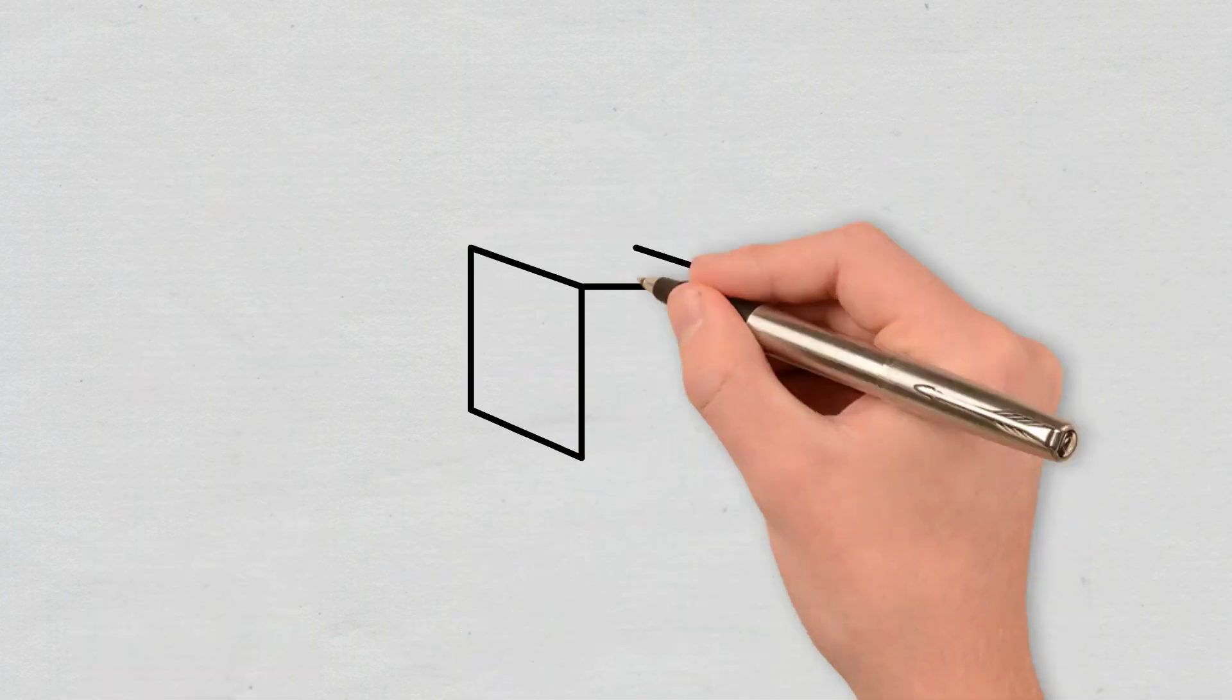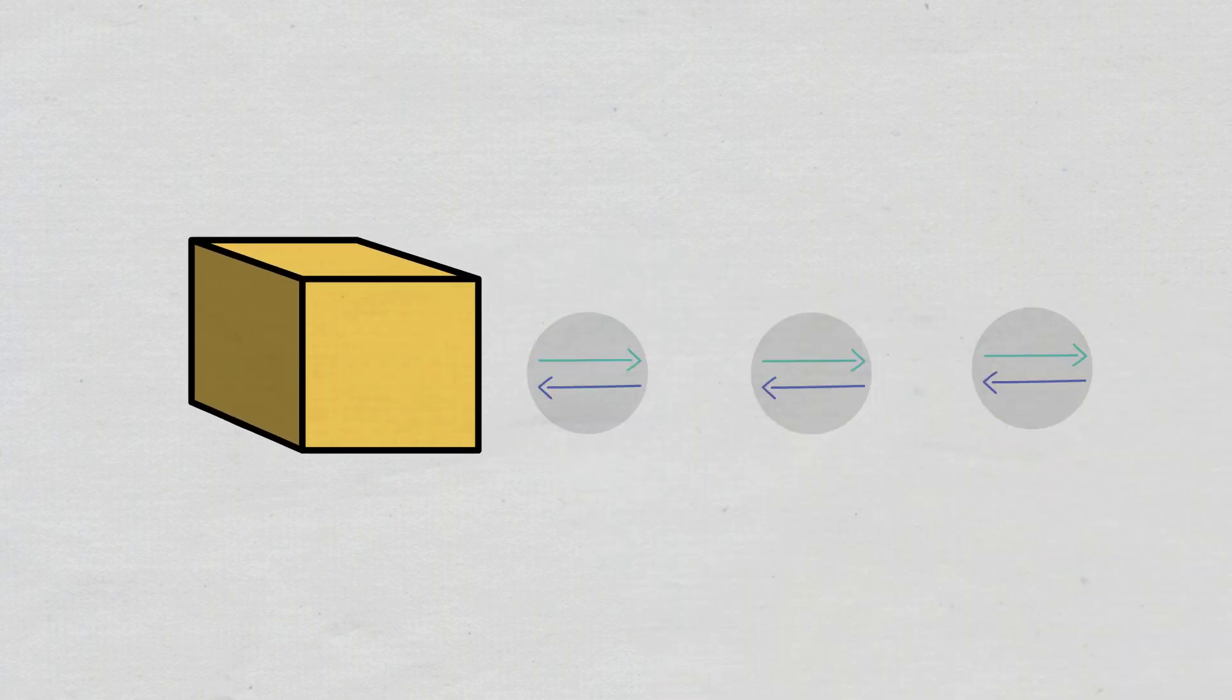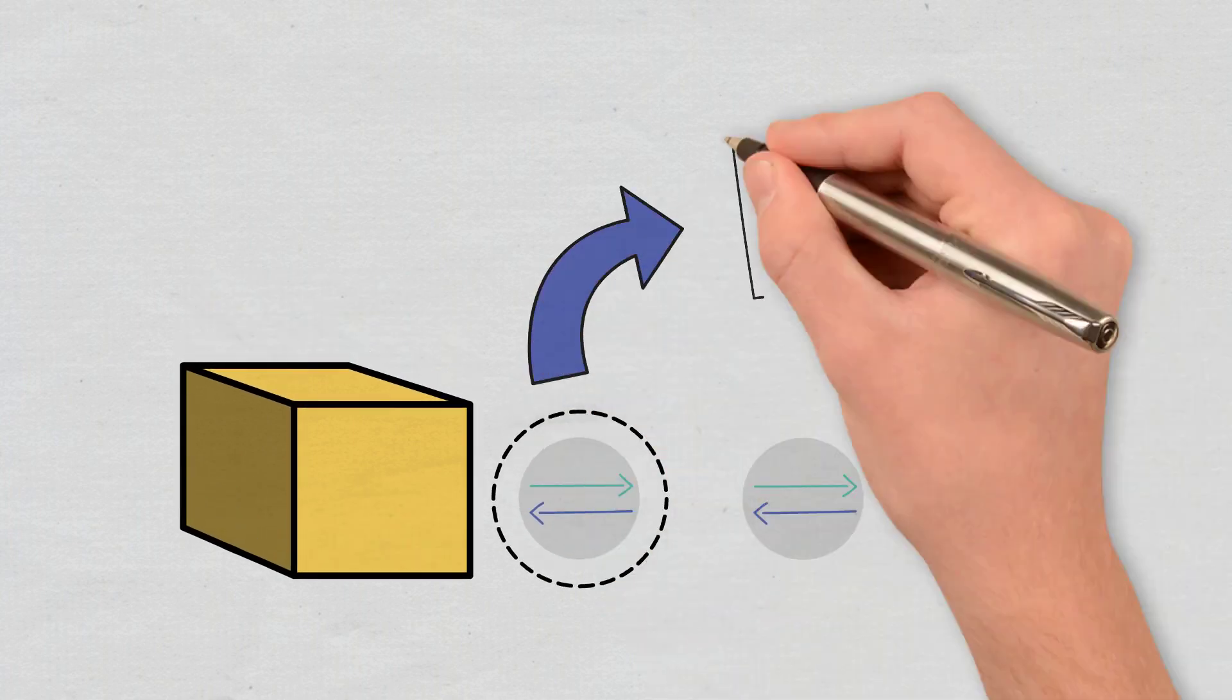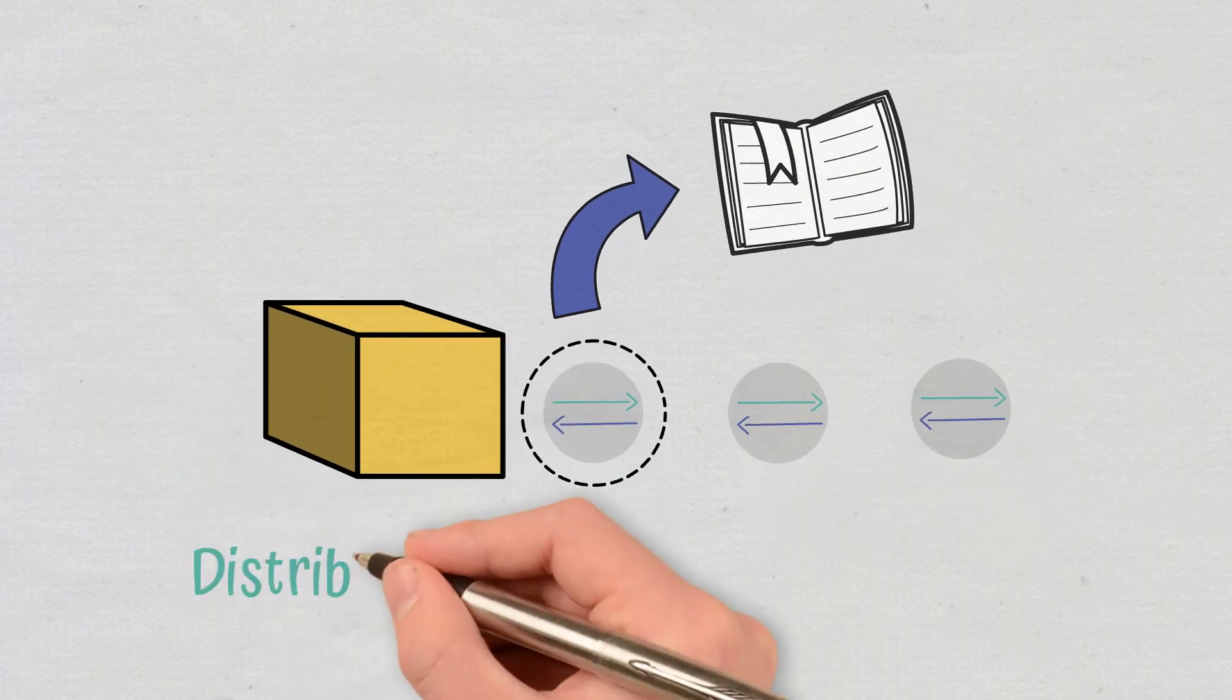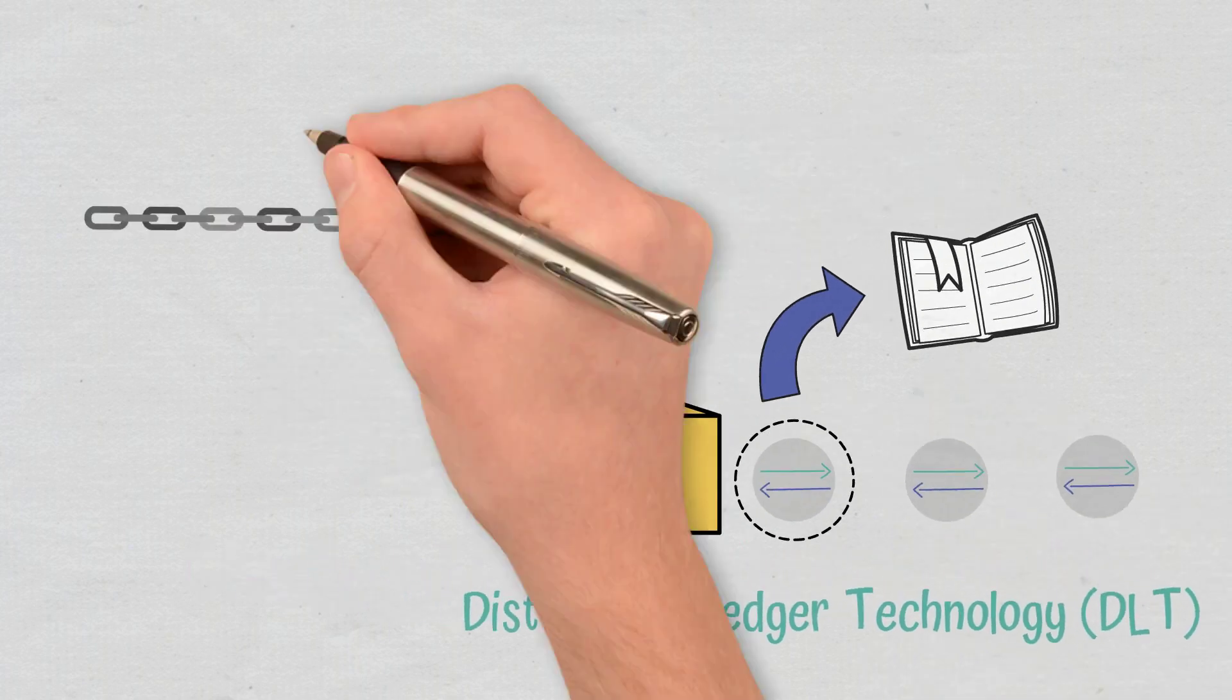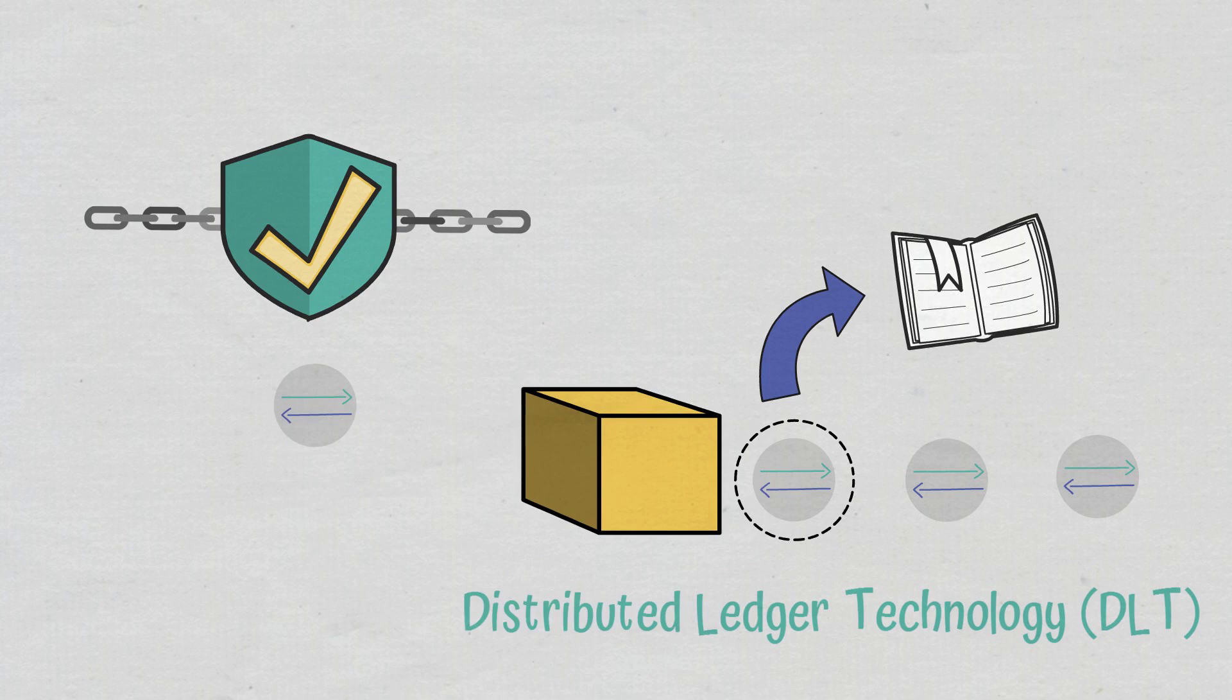Every block in the chain includes a series of transactions. When a new transaction takes place on the blockchain, a record of it is added on the ledger of all participants. This decentralized database that is managed by several participants is called Distributed Ledger Technology. Blockchain represents a type of DLT in which a transaction is recorded using a cryptographic signature known as a hash.